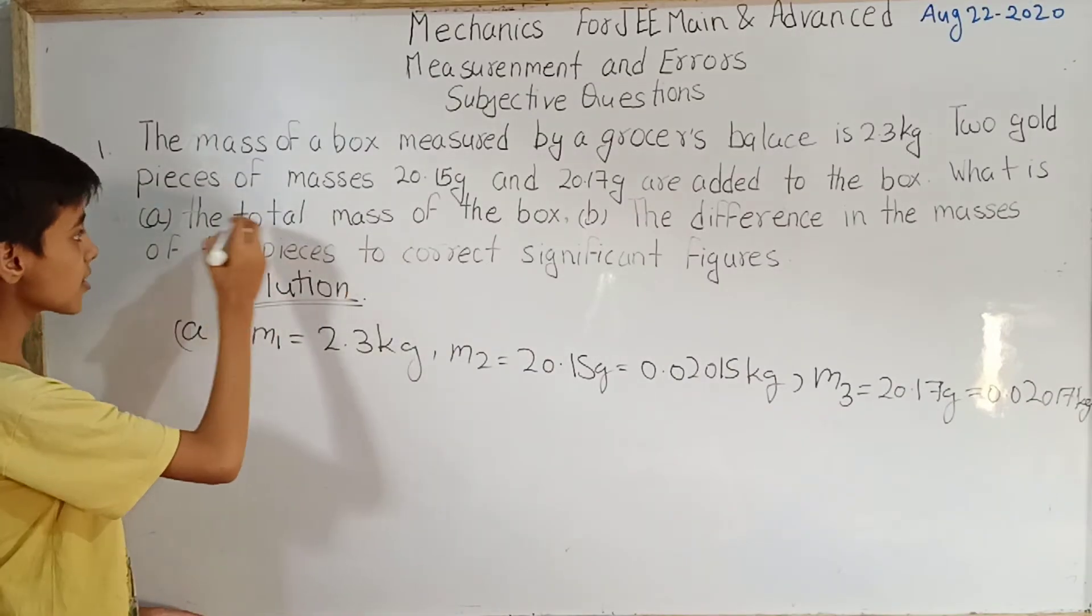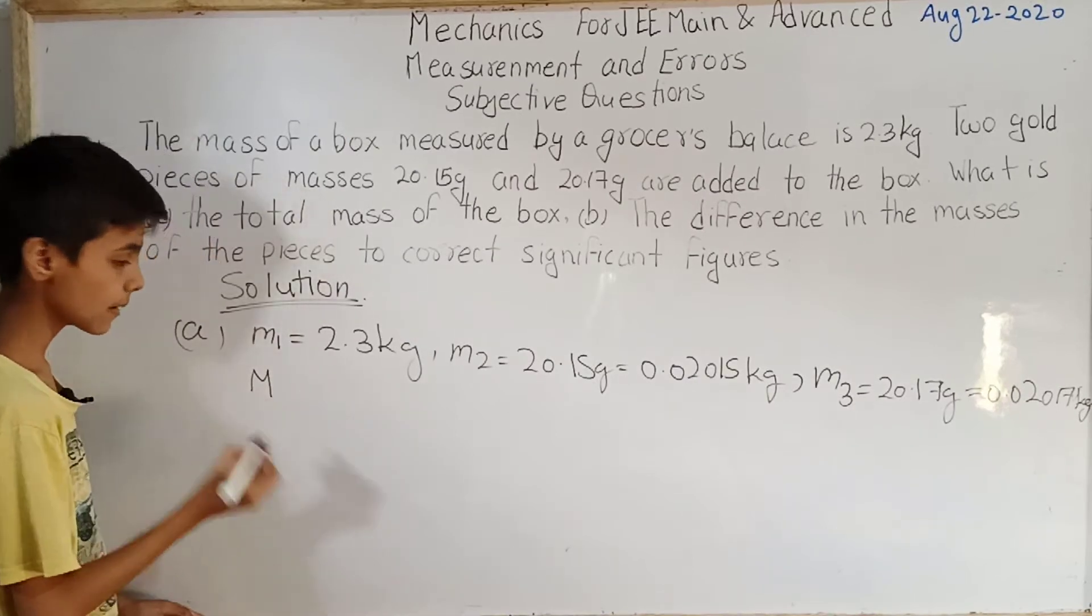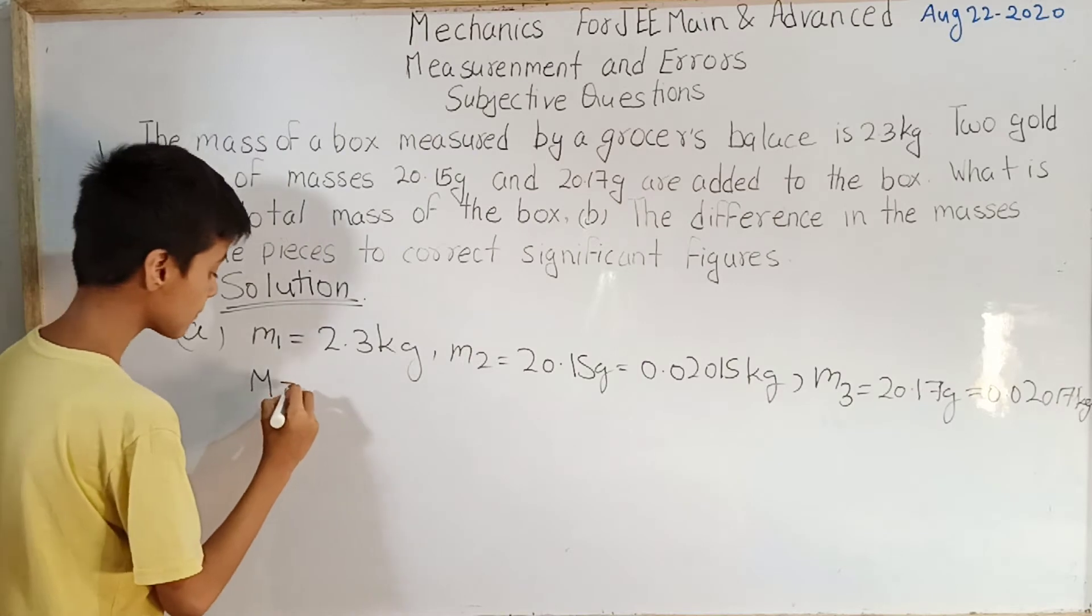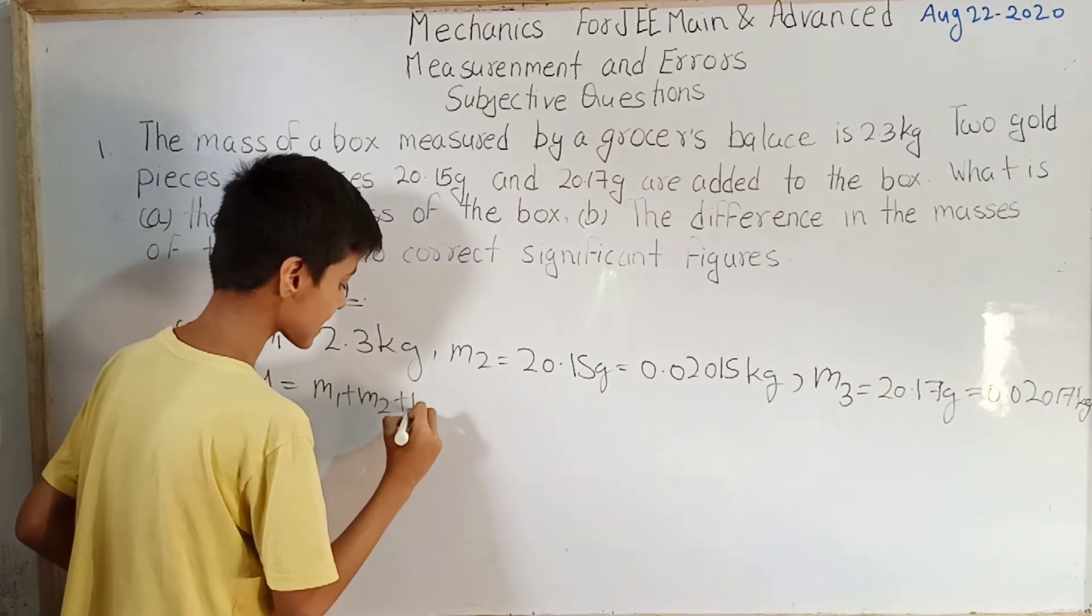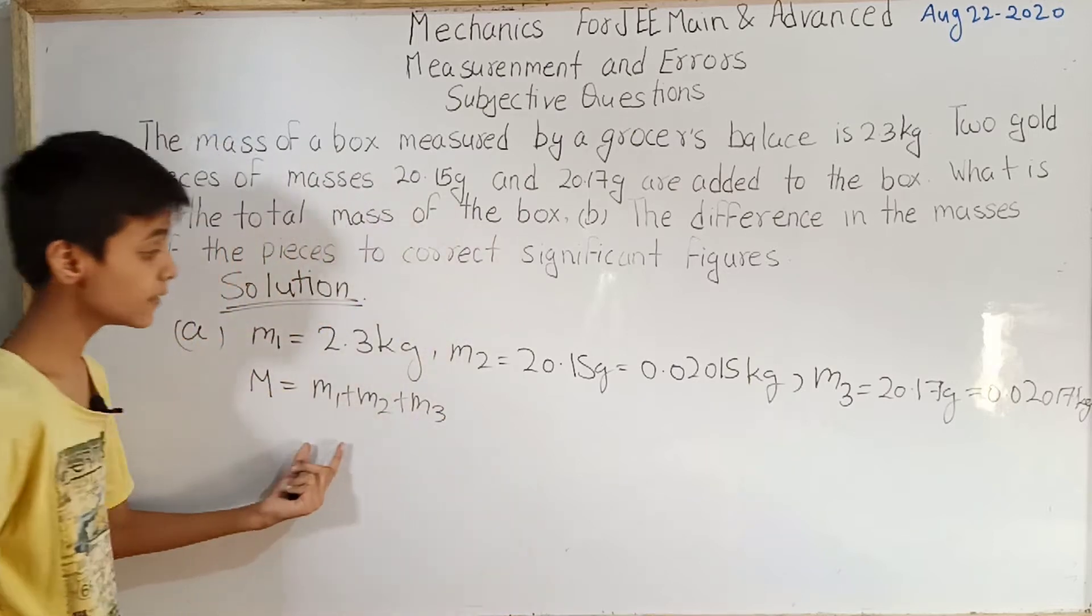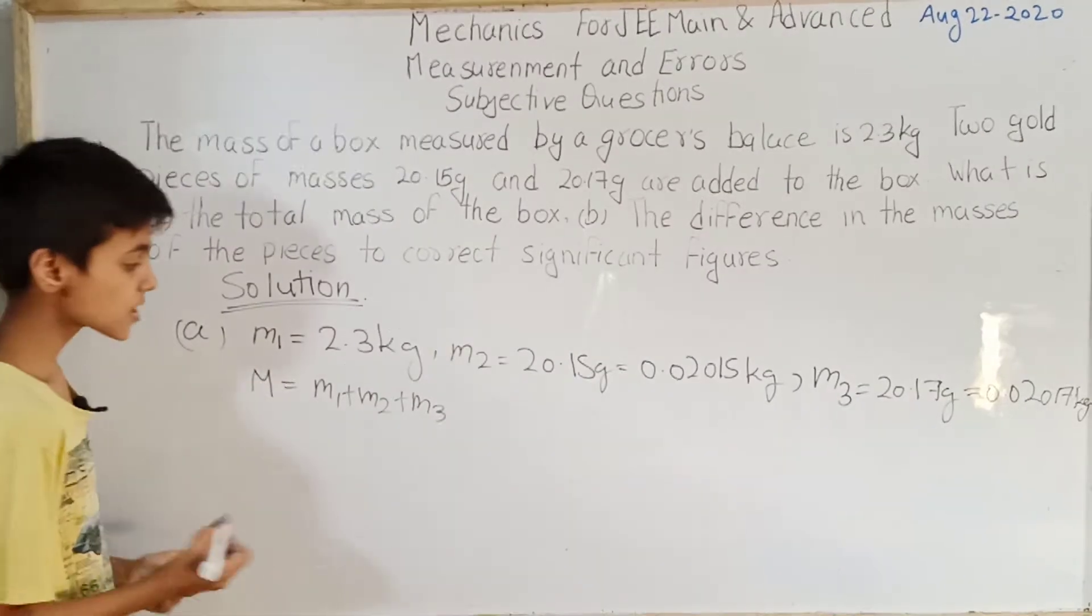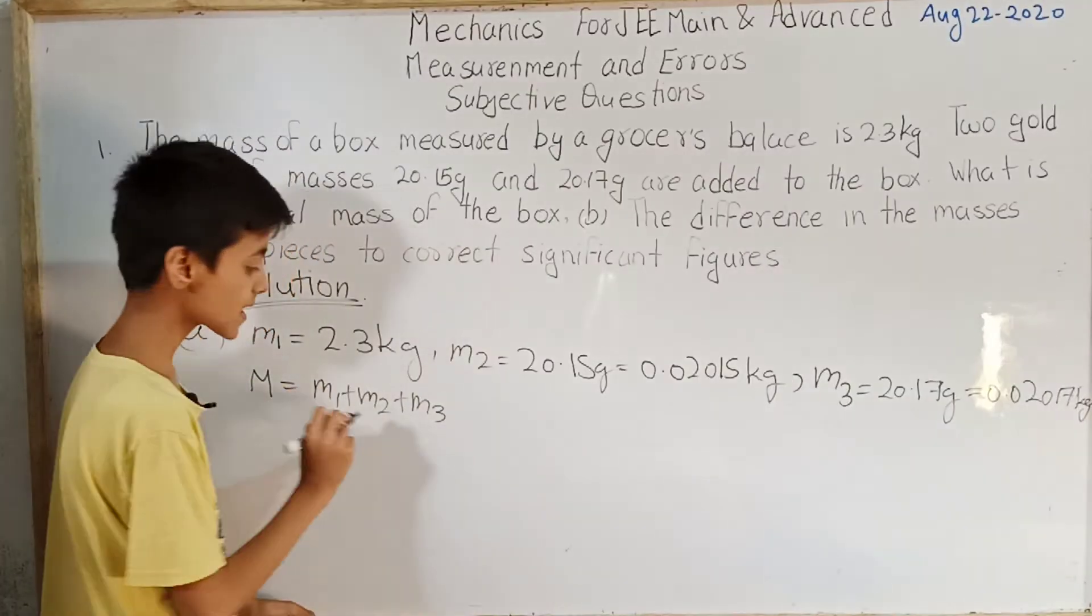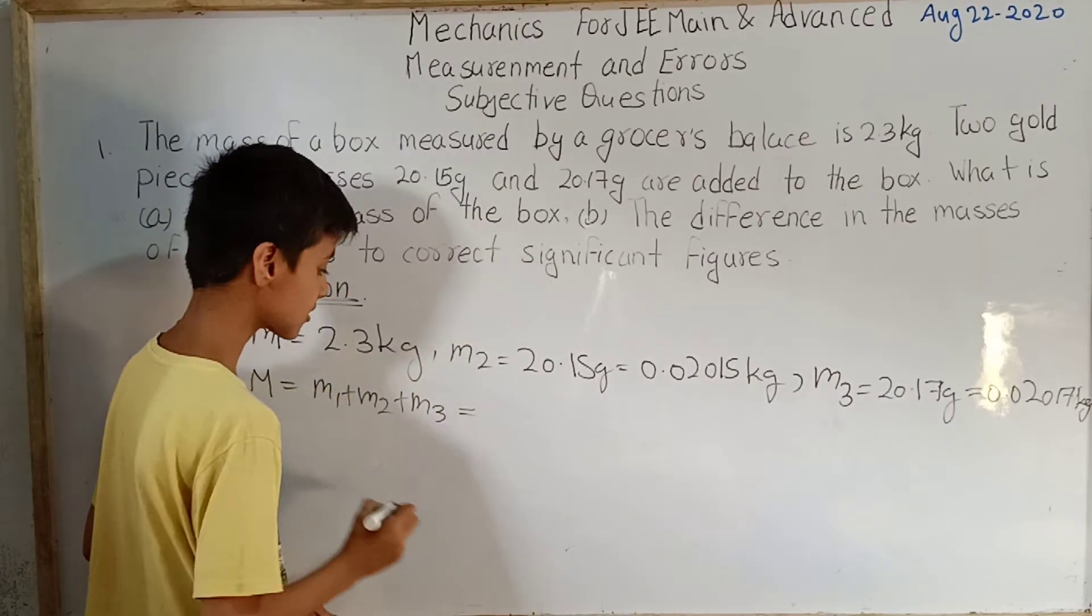Now let the total mass of this box be capital M. So what is the magnitude of this capital M? That is m1 plus m2 plus m3, because when we add all three masses we will get the total mass of the box. So m1 plus m2 plus m3 equals to 2.3.